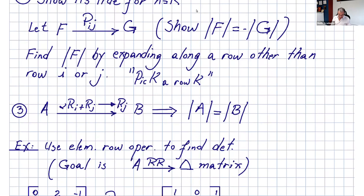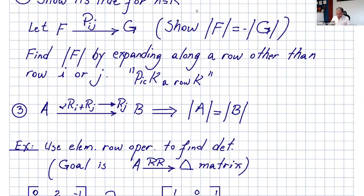The third row operation: if you multiply a row by a constant and add it to another row, changing row j, nothing happens to the determinant — it stays the same. Please check the proof for that one as well. So to summarize the three row operations: multiplying a row by constant alpha multiplies the determinant by one over alpha; permuting two rows changes the sign of the determinant; and multiplying a row by a constant and adding it to another row leaves the determinant unchanged.